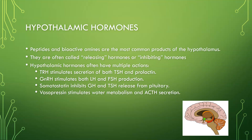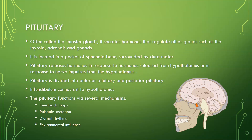The hypothalamic hormones are peptides and bioactive amines — the most common products of the hypothalamus. They are often called releasing hormones or inhibiting hormones and often have multiple actions. For example, TRH (thyrotropin releasing hormone) can stimulate secretion of both TSH and prolactin. GnRH (gonadotropin releasing hormone) stimulates both LH and FSH. Somatostatin can inhibit growth hormone and TSH release from the pituitary, and vasopressin — also called antidiuretic hormone — can stimulate water metabolism and ACTH secretion.